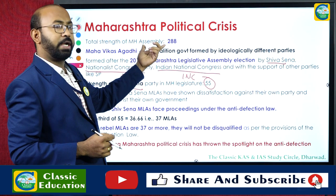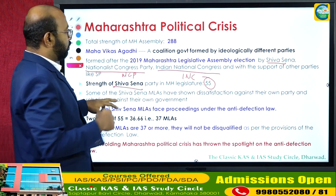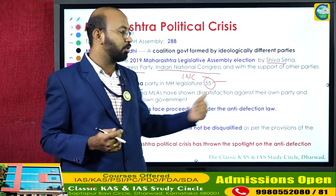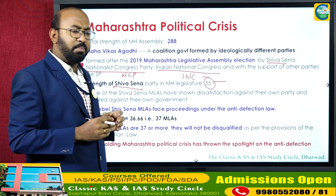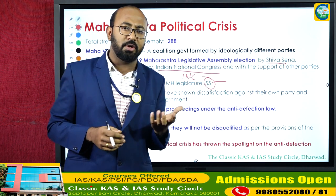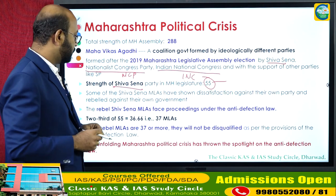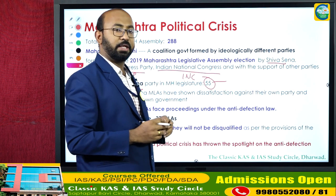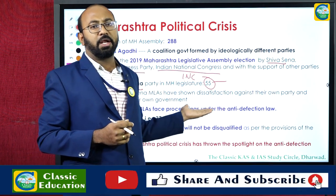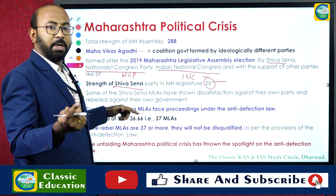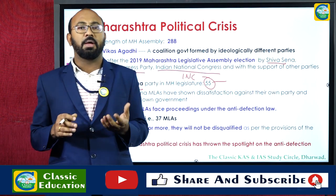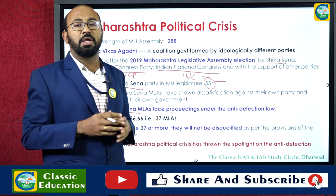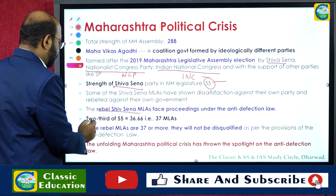Shiv Sena has a total strength of 55 members in the assembly. Among these 55, some MLAs have shown dissatisfaction against their own party and rebelled against the government for various reasons. These rebel Shiv Sena MLAs now face proceedings under the anti-defection law. Those who left the state and are staying outside face the threat of losing their assembly membership.